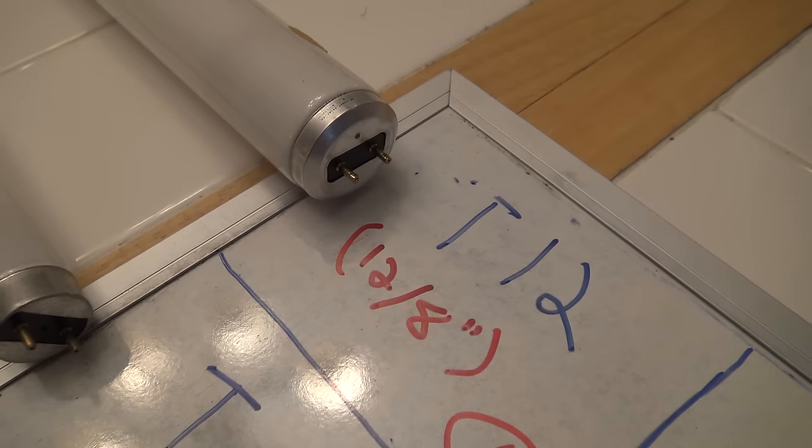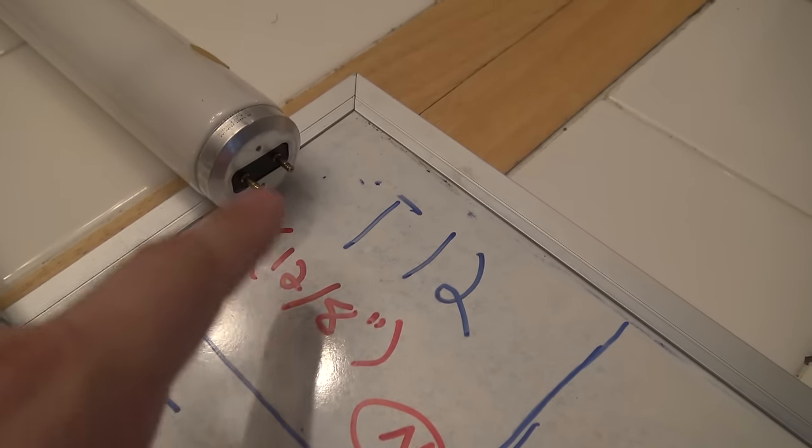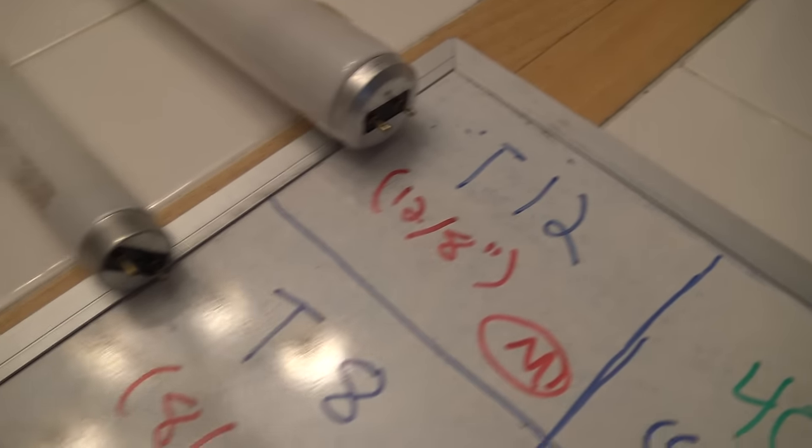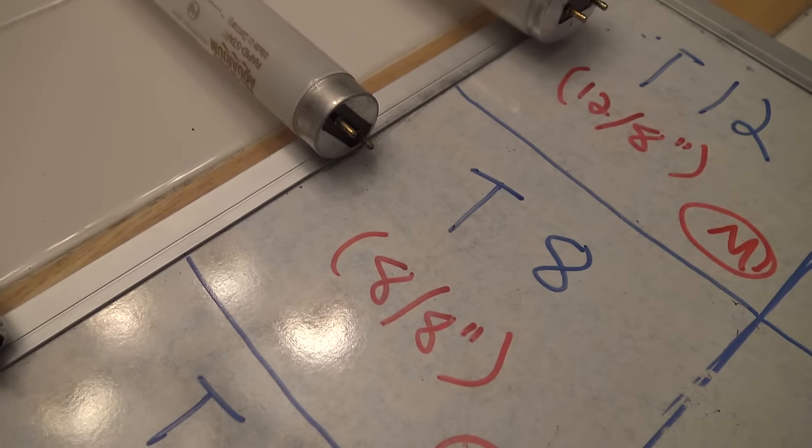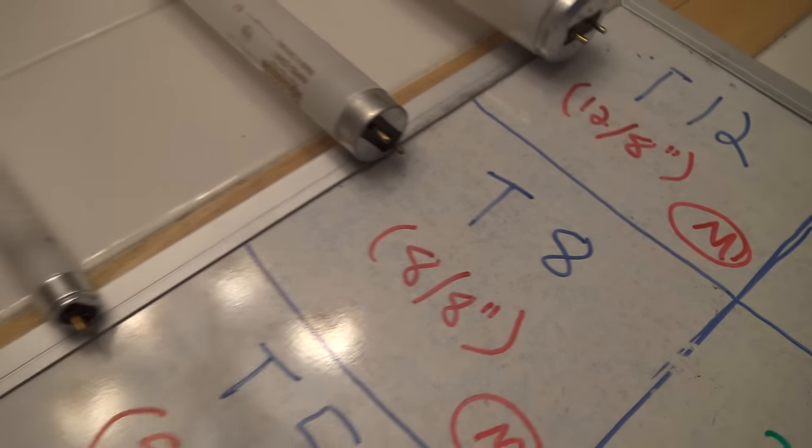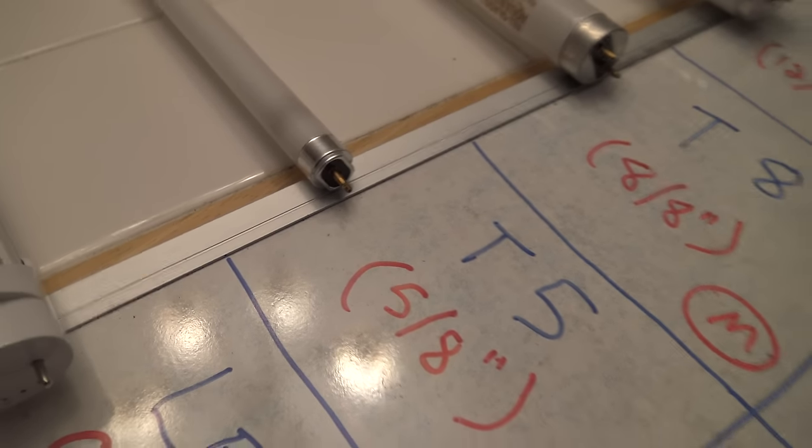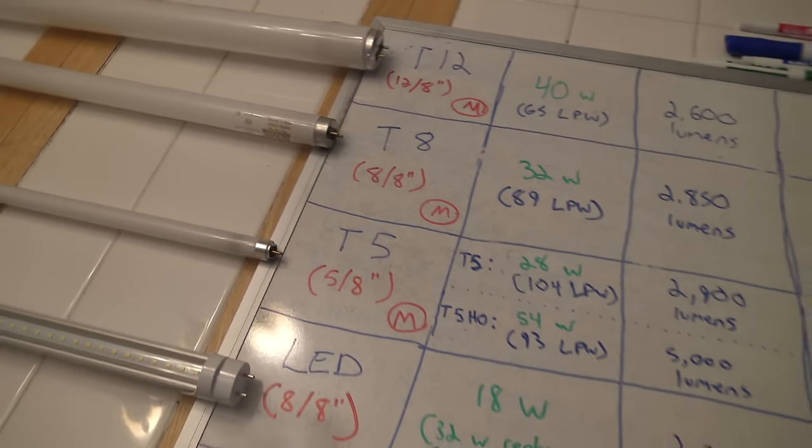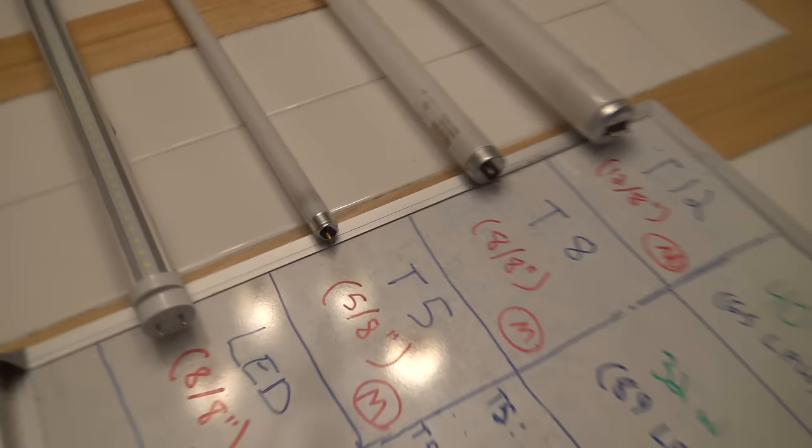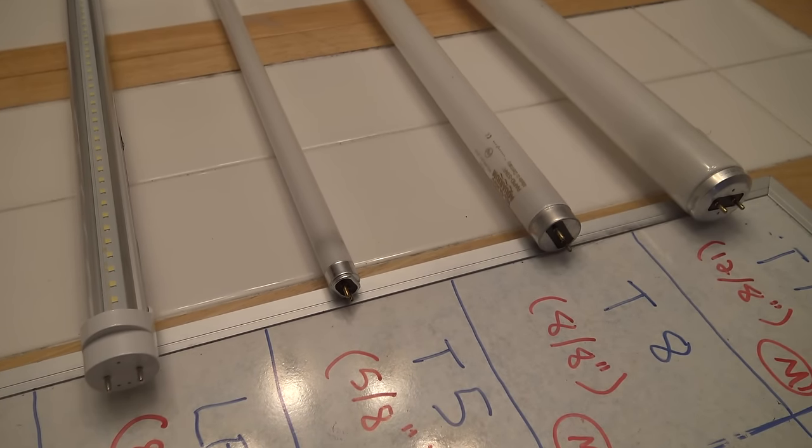It's called a T12 because it's 12 eighths of an inch in diameter. Then here we have a T8, that's 8 eighths of an inch or 1 inch in diameter. And here's a T5, 5 eighths of an inch. So that's where the numbers come from, and this is what they look like in comparison to one another in terms of size.